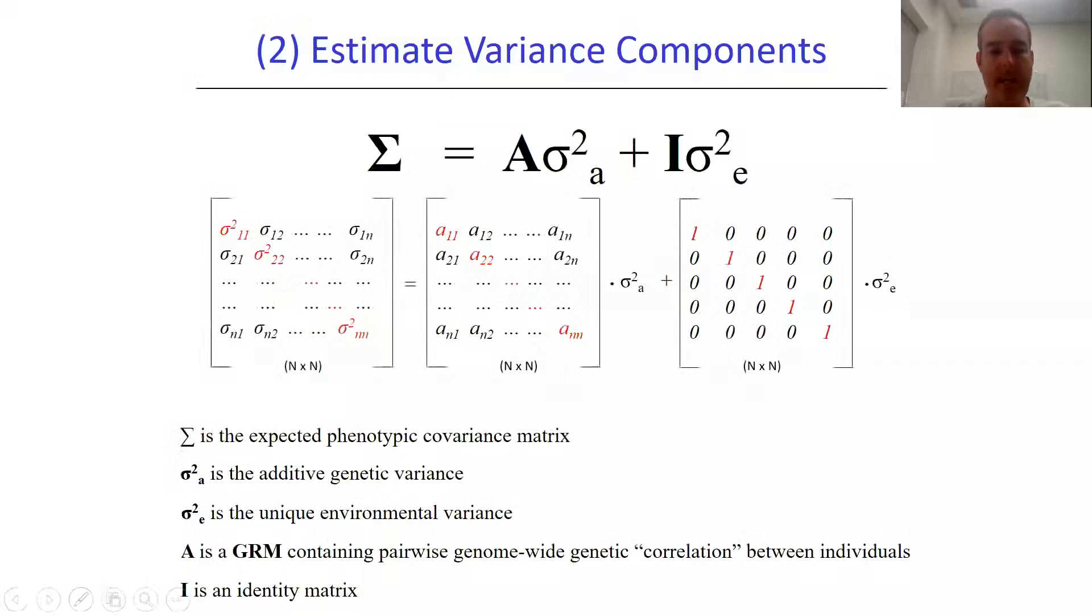In this lecture, I'm going to be talking about the underlying variance components model that GCTA uses, and it looks like this matrix equation.